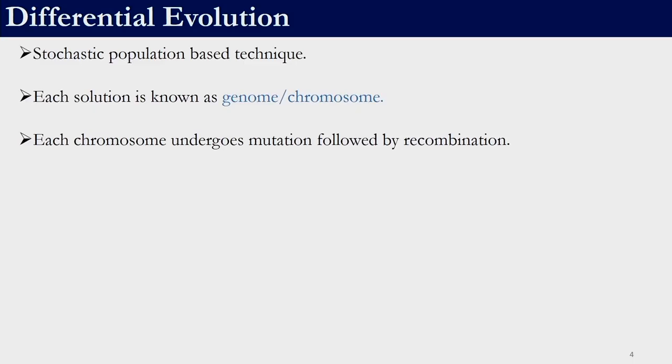Just like particle swarm optimization and teaching learning based optimization, differential evolution is a stochastic population technique. In differential evolution, each solution is known as a genome or chromosome. Each chromosome undergoes mutation followed by recombination — those are the two operators: mutation and recombination operators.